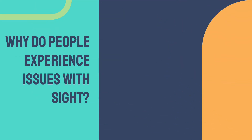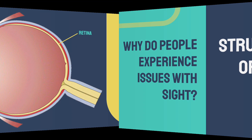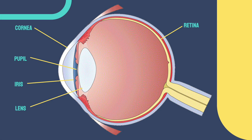Why do people experience vision problems such as nearsightedness, farsightedness, or astigmatism? Well, it has to do with the structure of the eye. Here is a diagram of the eye. It consists of many structures. The most important ones are the cornea, pupil, iris, lens, retina, and the fovea.